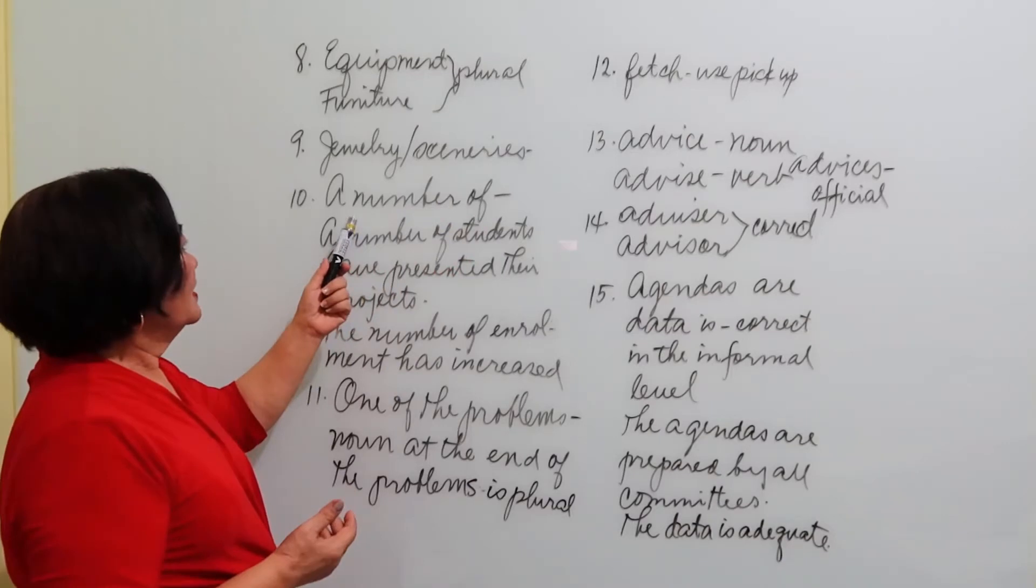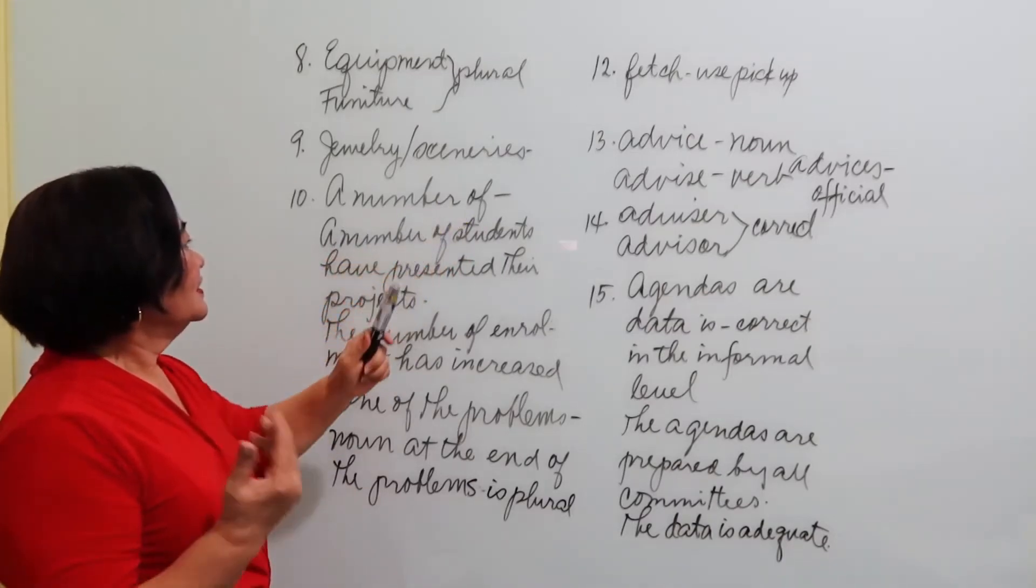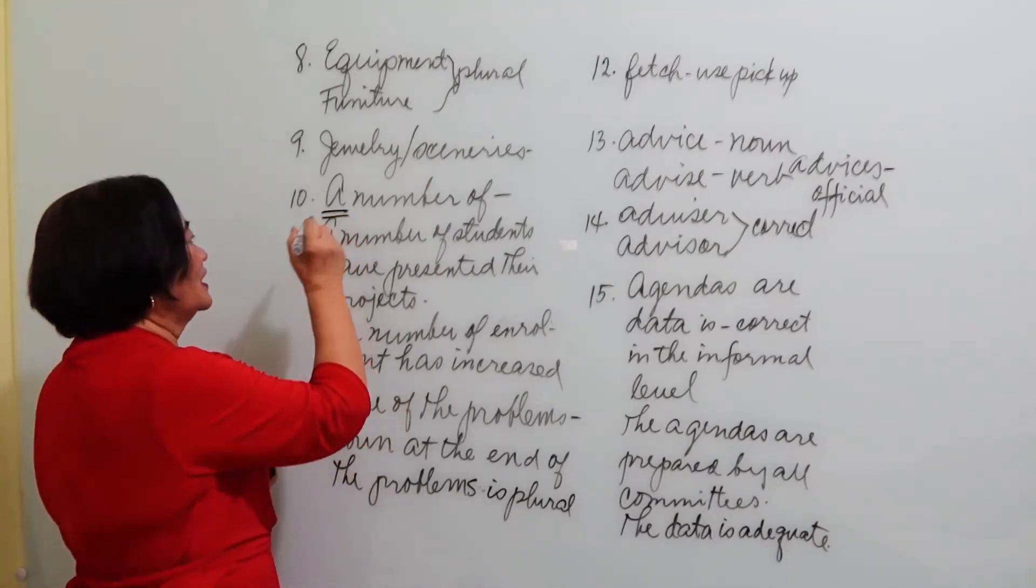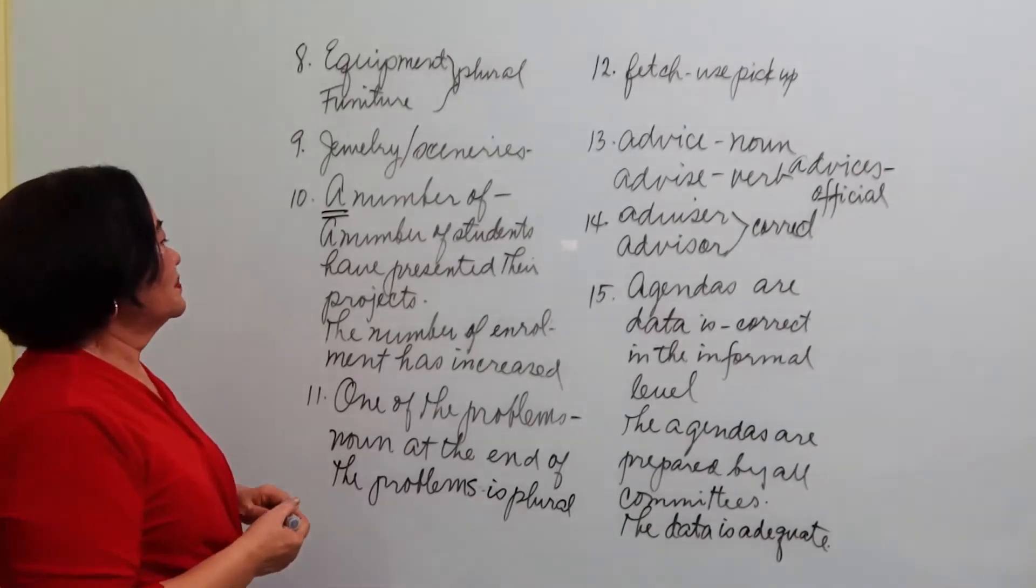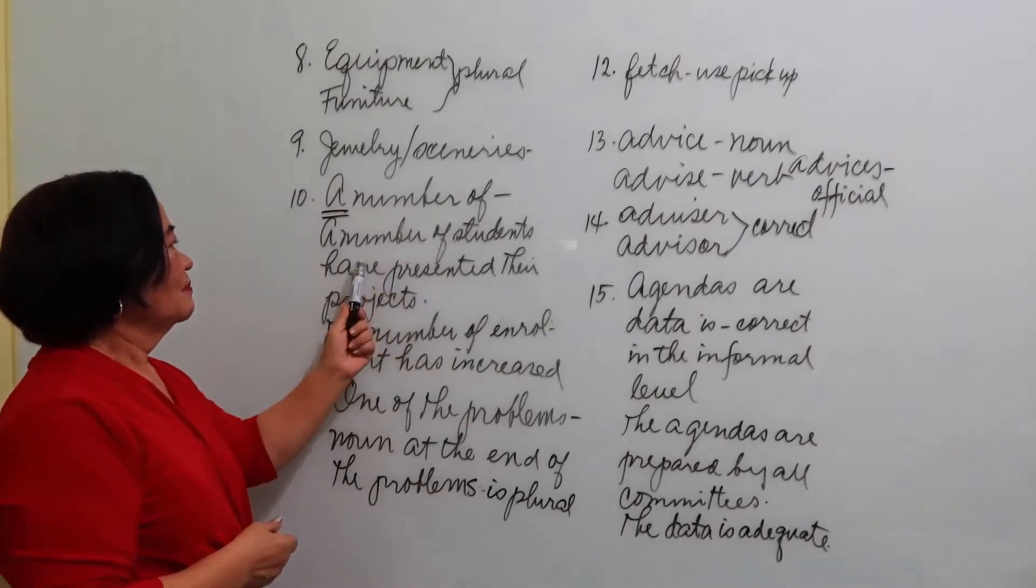Now, we have 'a number of.' This should be used with plural. When you have a number of, so a number of students have presented their projects. Plural.